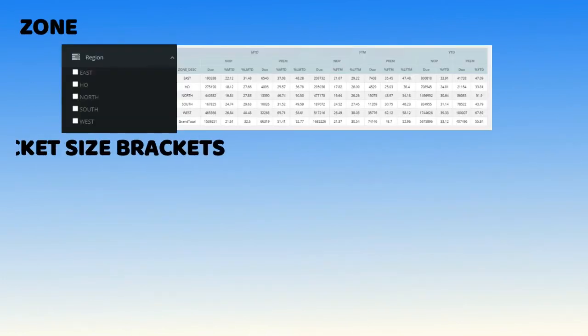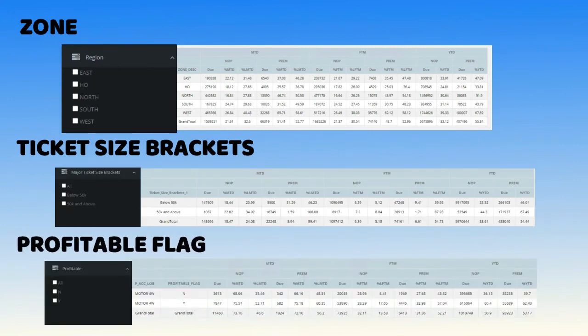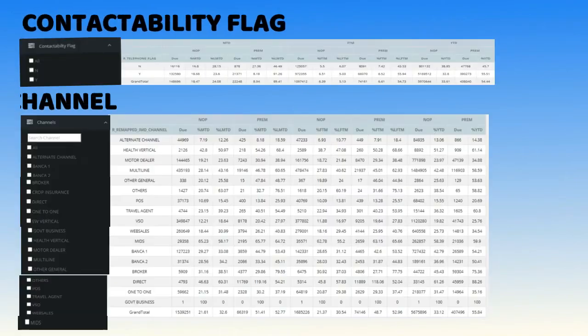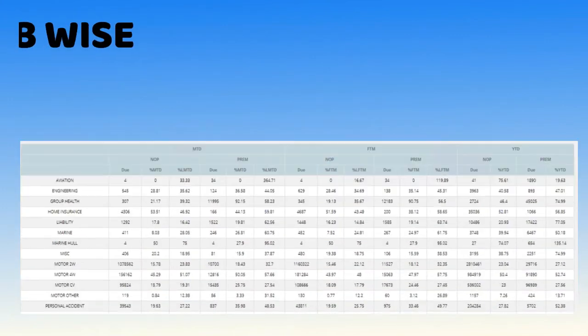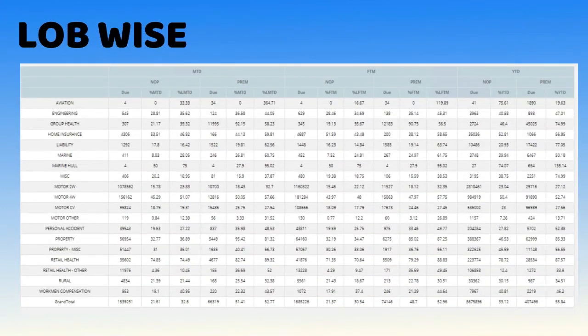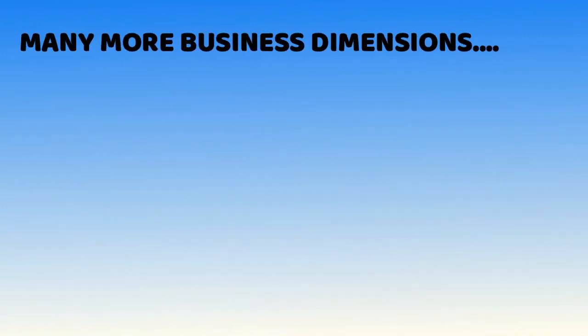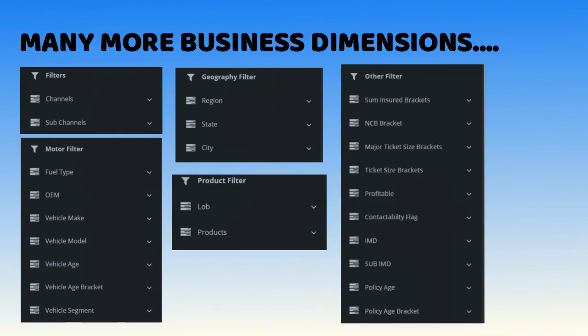The dashboard allows users to slice and dice data according to business dimensions such as zone, ticket size brackets, profitable flag, contact ability flag, channel, LOBs, and many more business dimensions.